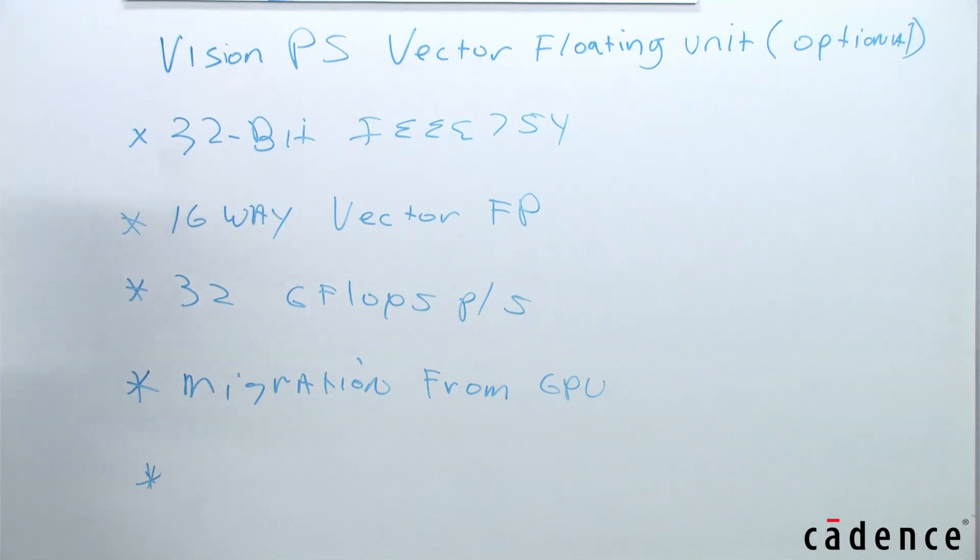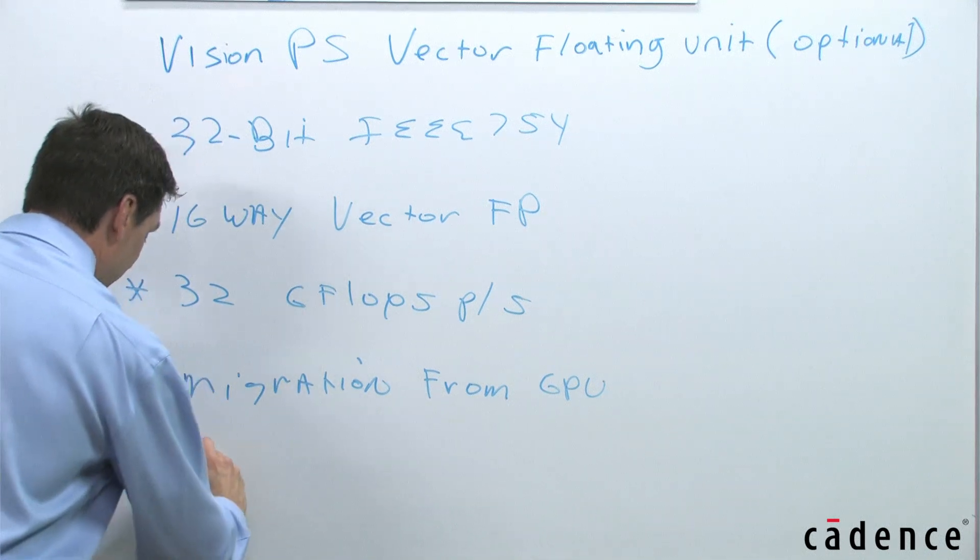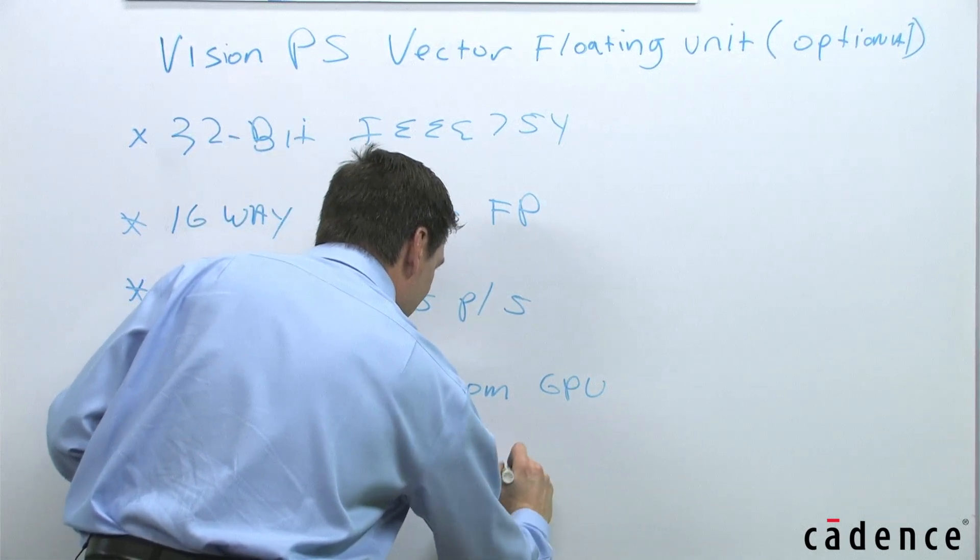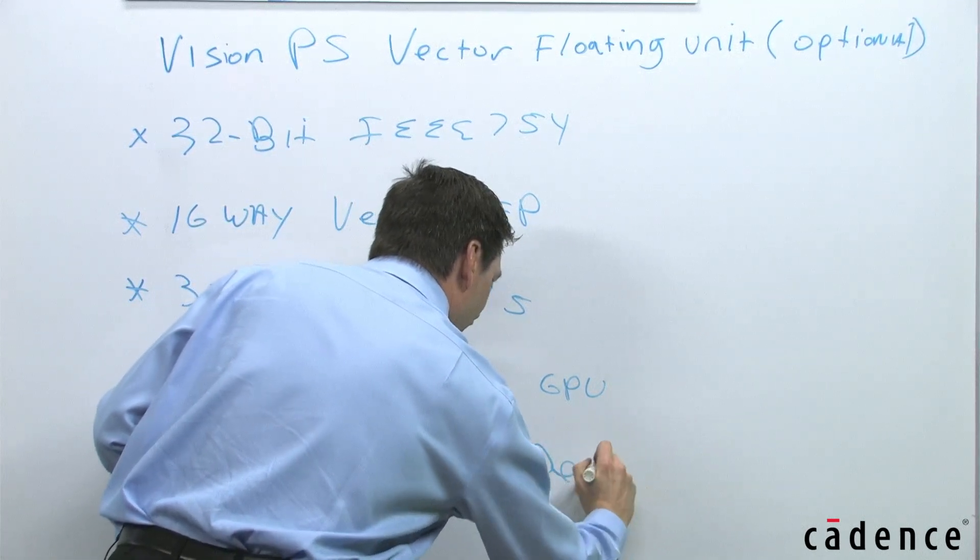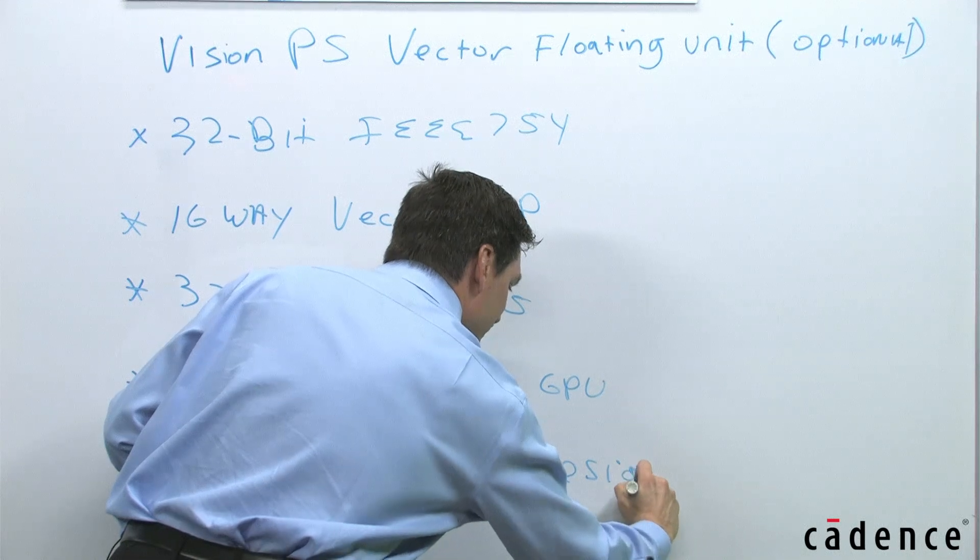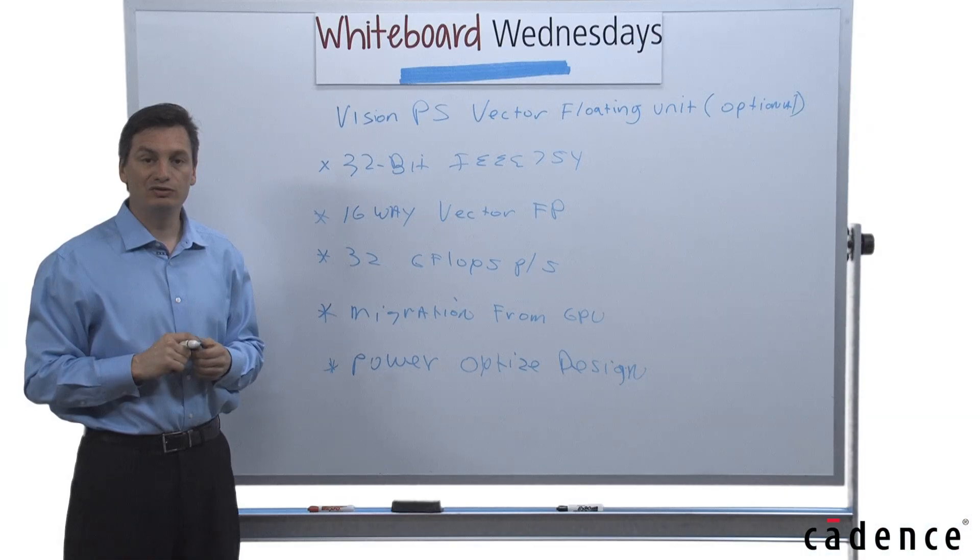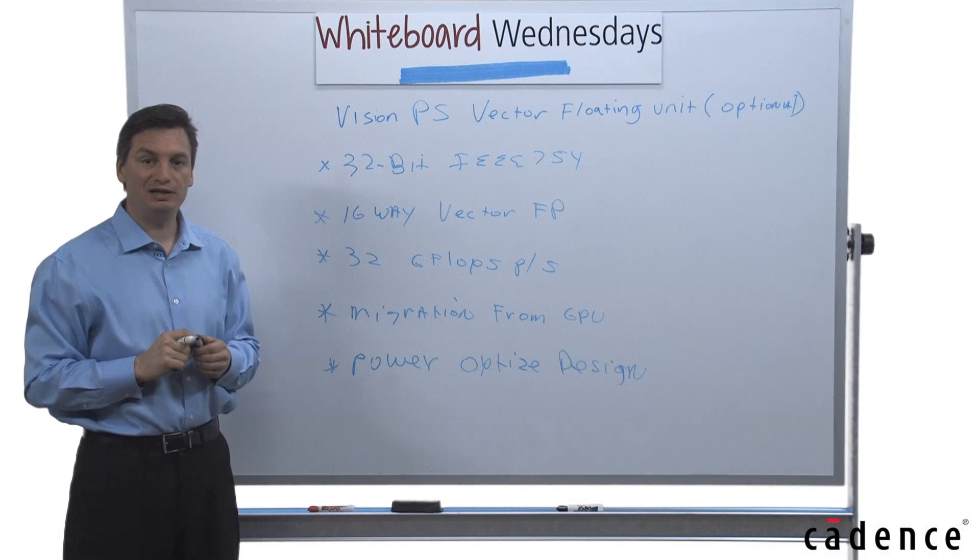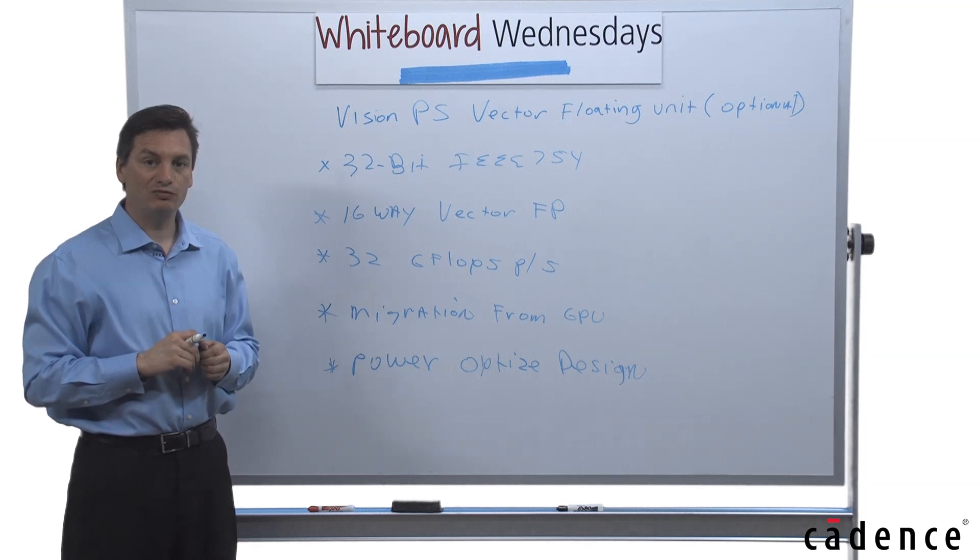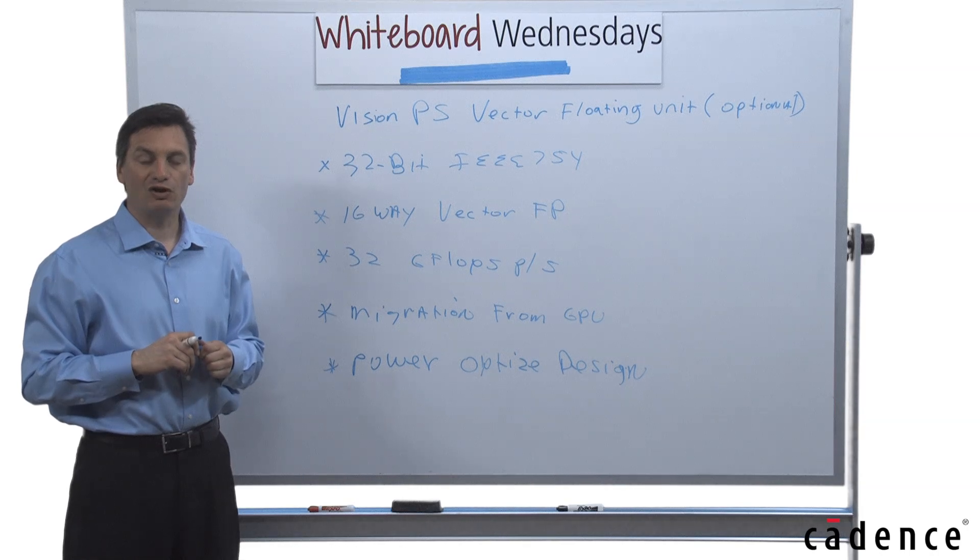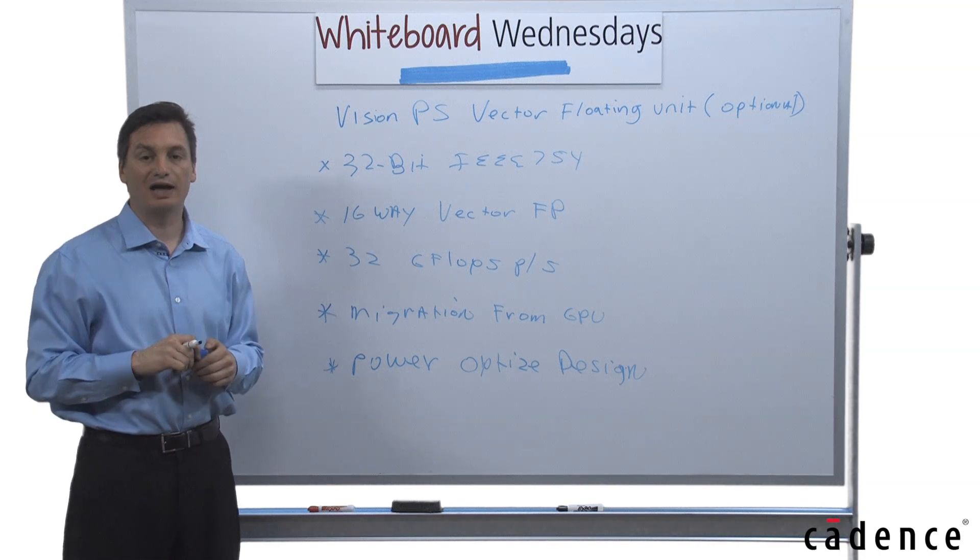And our last point here is a power optimized design. So in this design, we have clock gated all of the different structures inside of the DSP and inside of the vector floating point unit to power down automatically if they're not being used. So you can mix DSP standard integer code with floating point code, and if those units aren't being used, they get powered down automatically using our power optimized design and our clock gating.